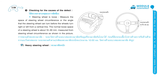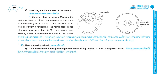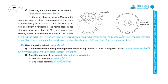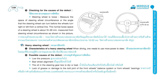Heavy steering wheel. Characteristics: when driving, one needs to use more power to steer. Possible causes include: low tire pressure, bad wheel alignment, the oil in the steering gearbox is dry or bad, lack of grease or damage to the bolt joint of the front wheel's balance system or front wheel's bearings, and improperly adjusted steering gear.